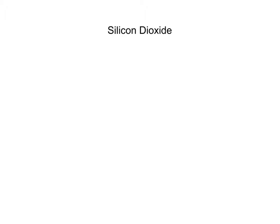For our second example, we'll look at something very common — we're going to look at glass. Glass is made up of something called silicon dioxide, and silicon dioxide has the chemical formula SiO2. We're going to follow the same treatment as with ammonia: first we'll think about how many electrons we have present, and then how many we would need. In this case both silicon and oxygen follow the octet rule. We have one silicon and two oxygens.